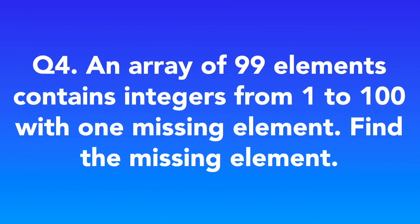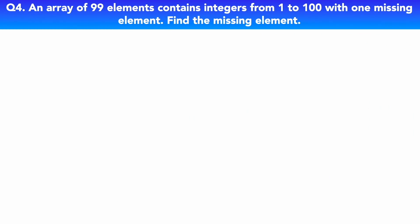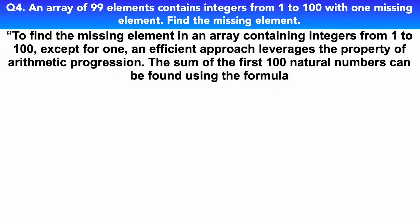Question four: an array of 99 elements contains integers from 1 to 100 with one missing element — find the missing element. This can be a really tricky question for many people. To find the missing element, an efficient approach leverages the property of arithmetic progression. The sum of the first 100 natural numbers can be found using the formula S = N(N+1)/2, where N equals 100, giving us the expected sum.